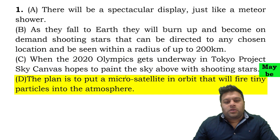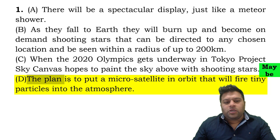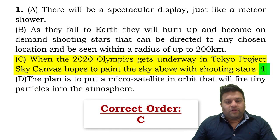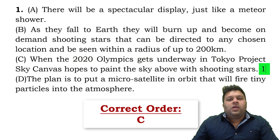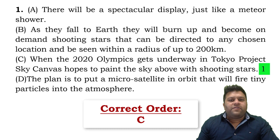Next sentence: 'the plan is to put a micro satellite in orbit that will fire tiny particles into the atmosphere.' The plan — plan for what? We don't know. As I explained in the five-finger strategy video, 'plan' is a common noun, not a proper noun, so it's talking about something rather than introducing it. The first sentence must be one that is introducing something new.